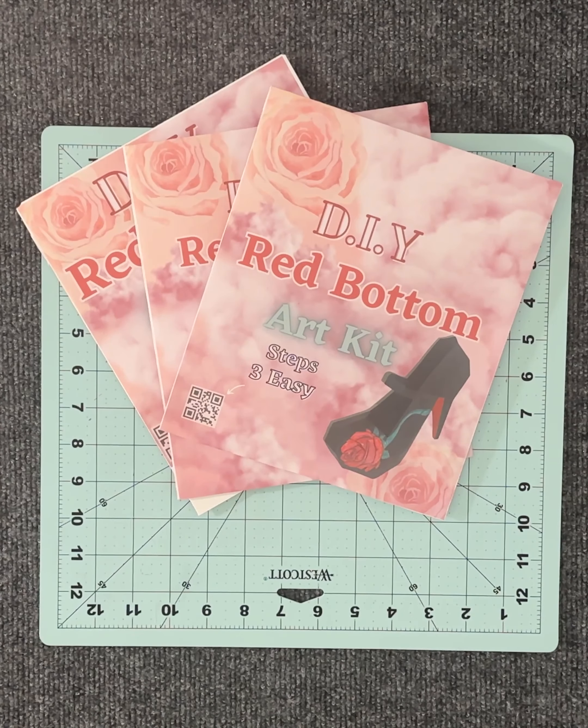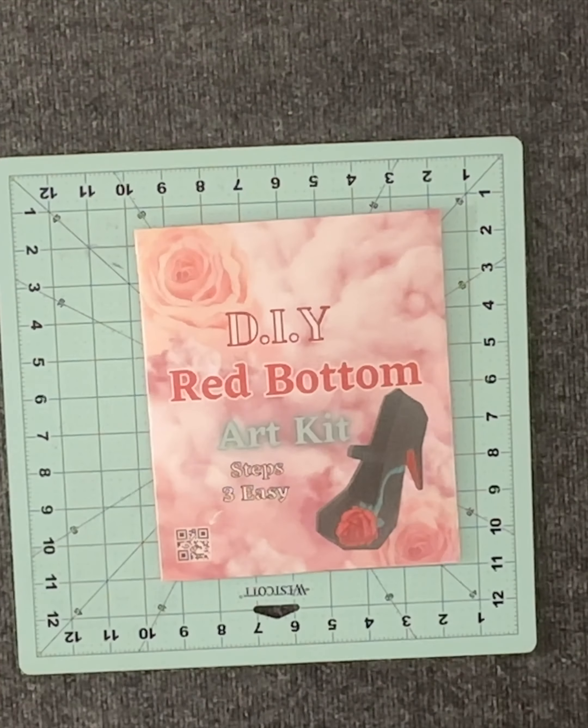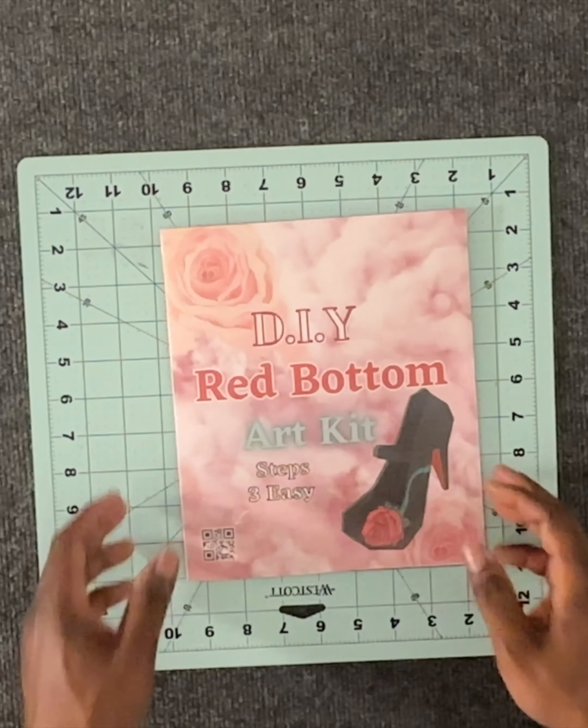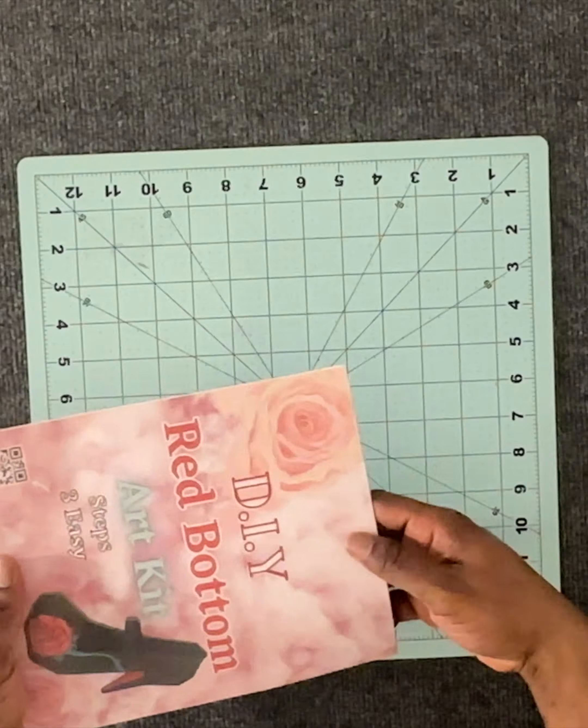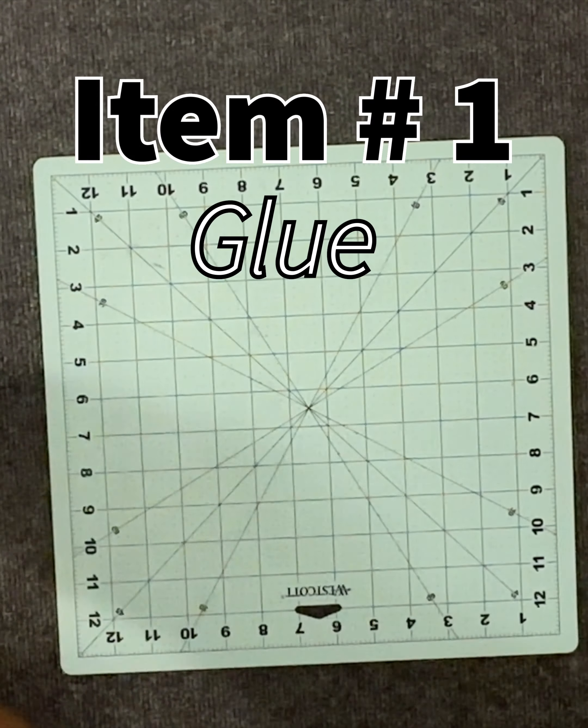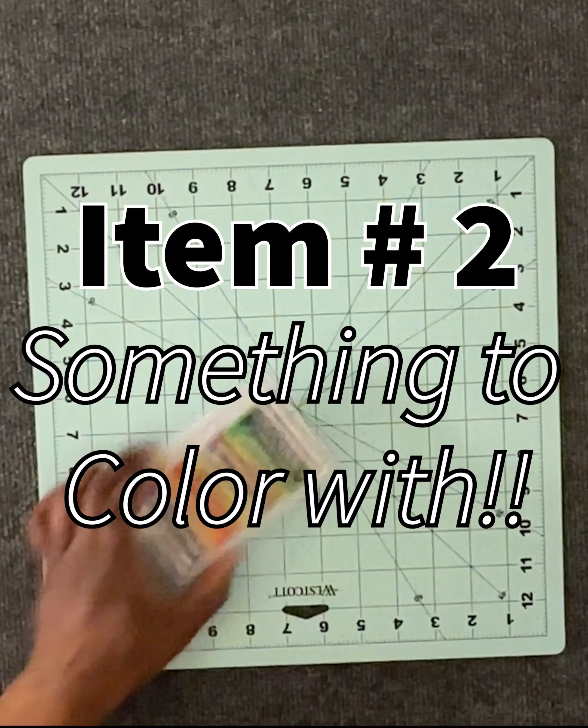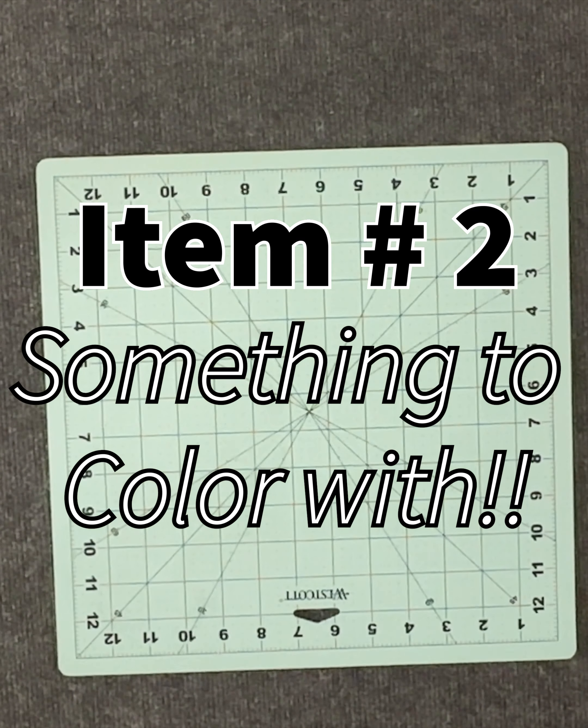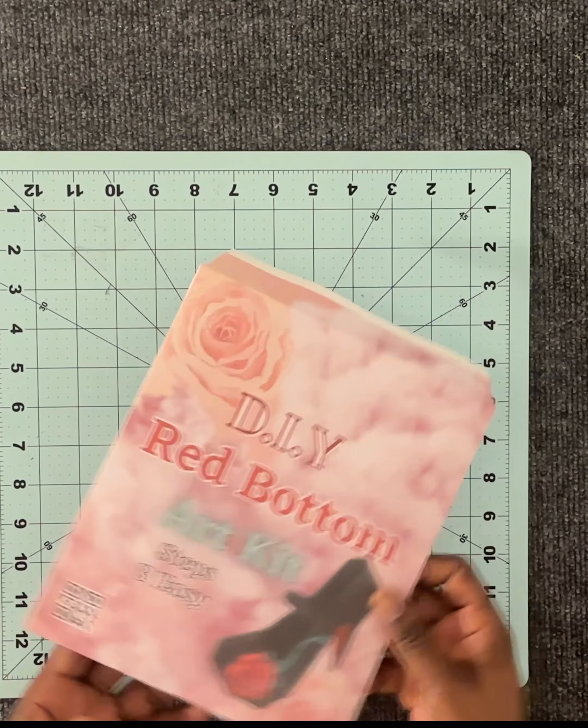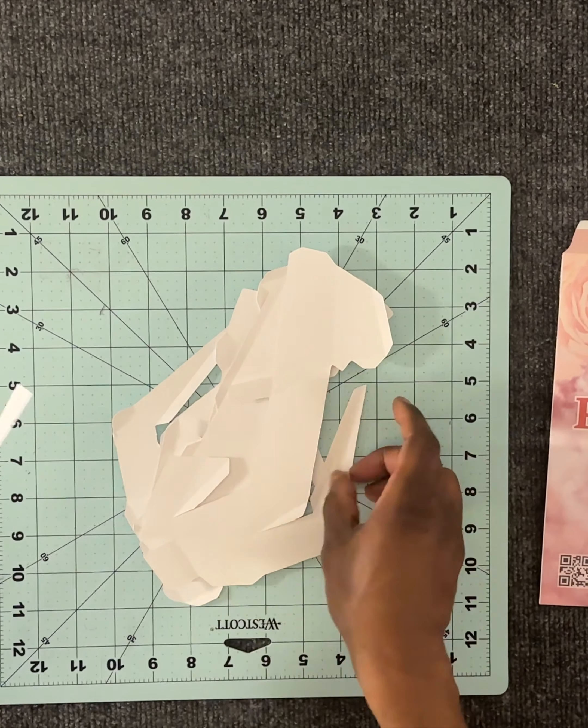So you bought your first red bottom art kit. You will learn how to put them together. What's so cool about these art kits is they already come pre-cut. Let me show you how to make them. You really only need two items: any type of glue, and any type of paint, any color pencils, any type of markers. It already comes pre-cut, so when you buy the pack there's five pieces that come with it.